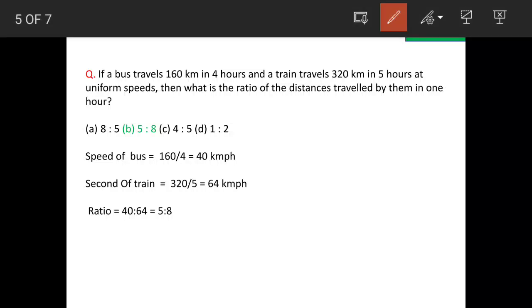If a bus travels 160 kilometers in 4 hours and a train travels 320 kilometers in 5 hours at uniform speeds, what is the ratio of distances covered by them in 1 hour? The answer is option B: 5 is to 8.